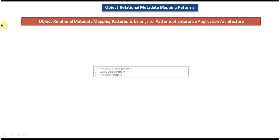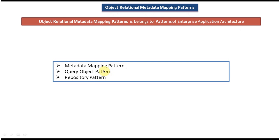There are three patterns which come under object relational metadata mapping patterns. The first one is the metadata mapping pattern, the second one is the query object pattern, and the third and final one is the repository pattern.